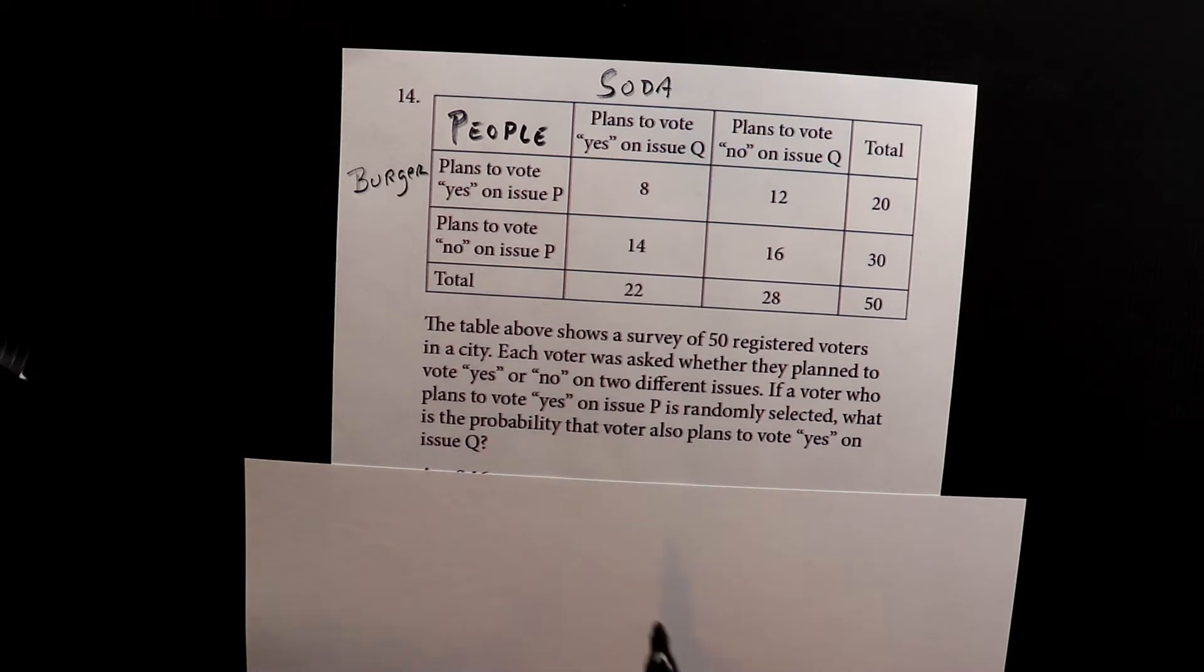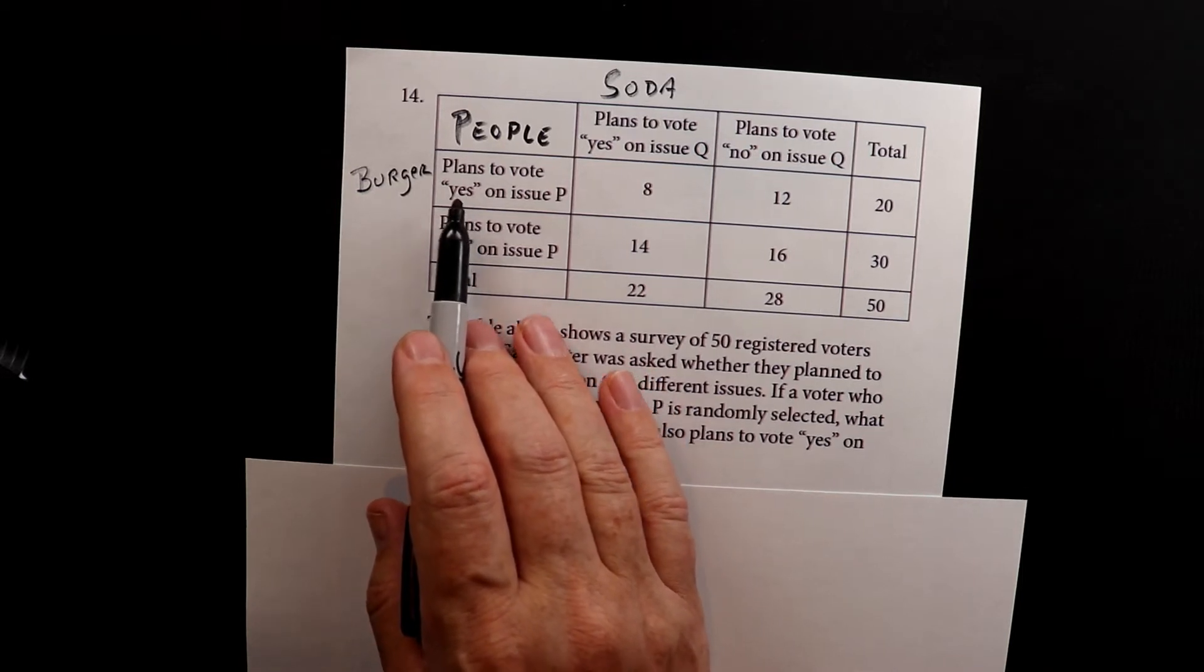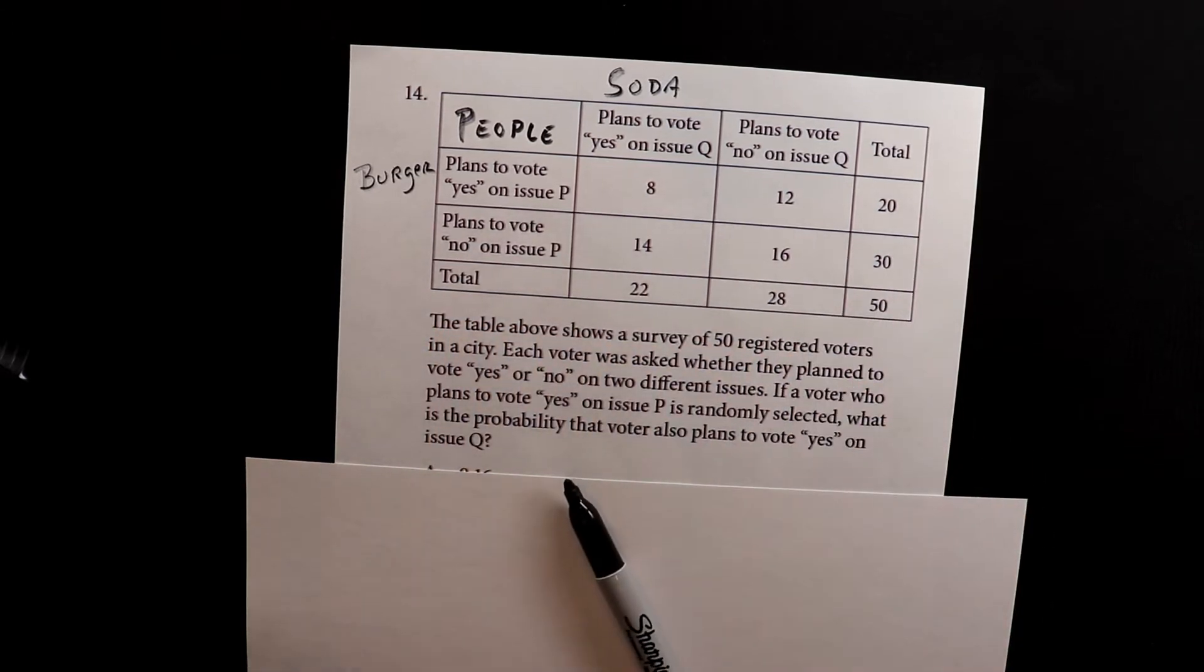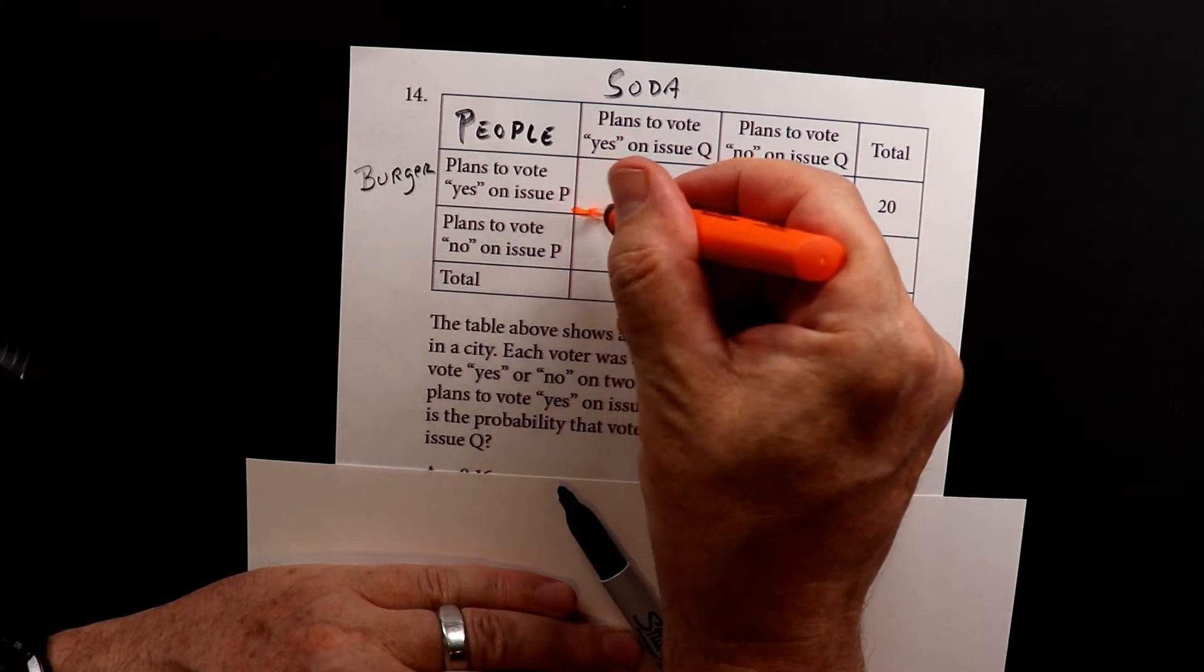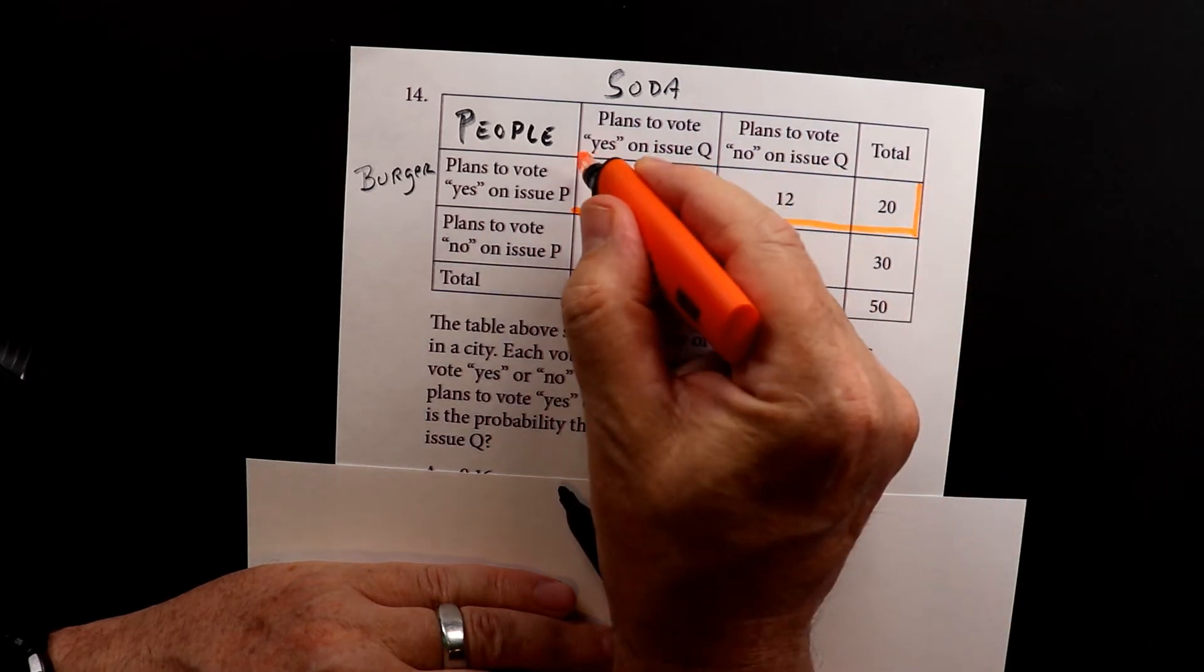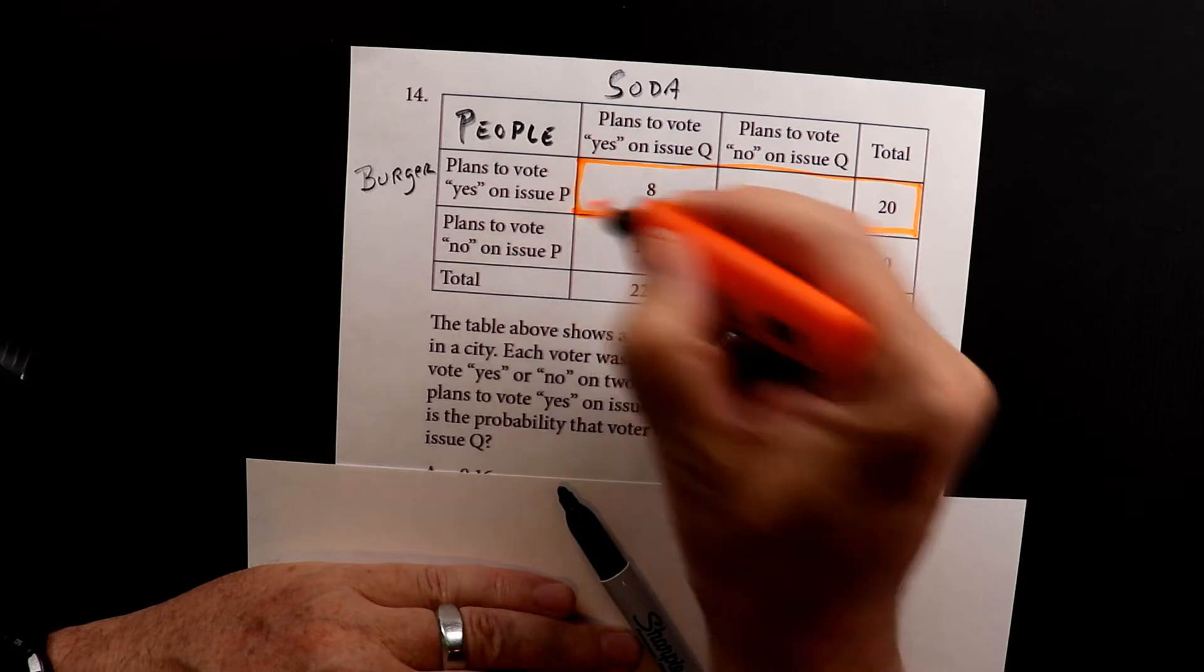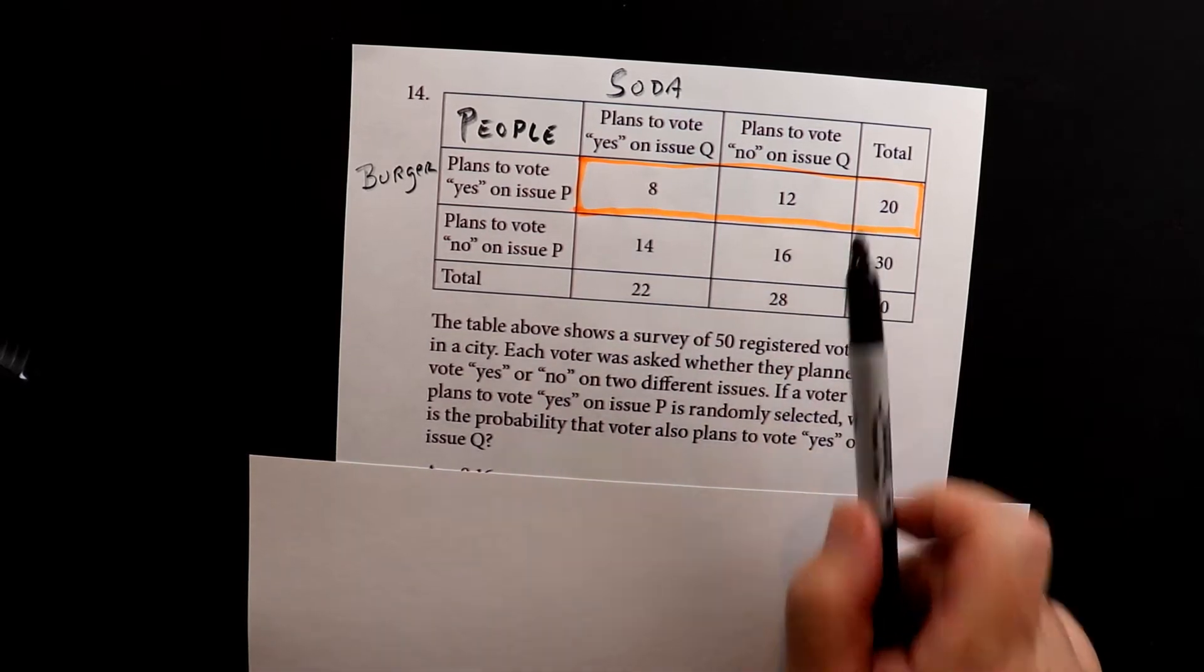So what they're doing is they're saying, first, we're going to focus on the people who voted yes to whether or not they like burgers. So these are the burger likers. They're focusing on this group of people. So let me highlight it. It's just going to be on these folks up here. What that's telling us is we're going to, just for the time being, not be concerned with the other group. We're just looking at the people that are in the top row.